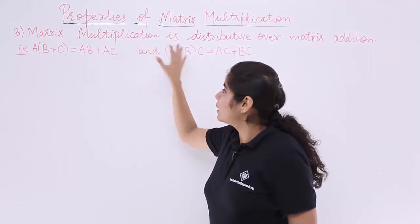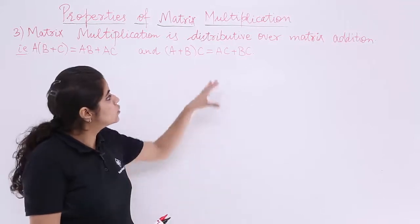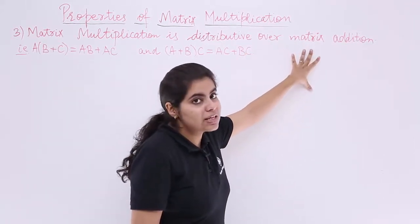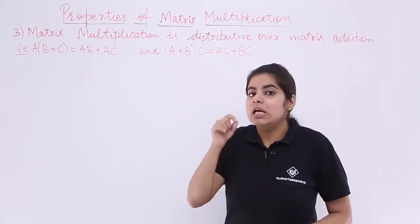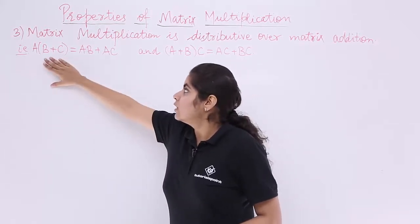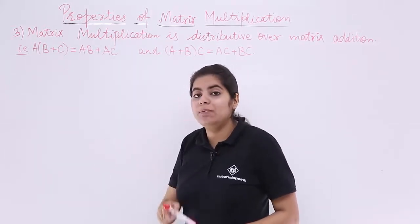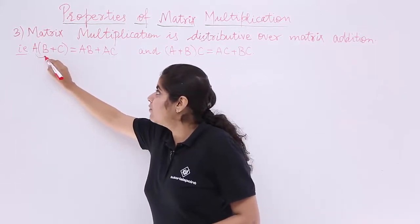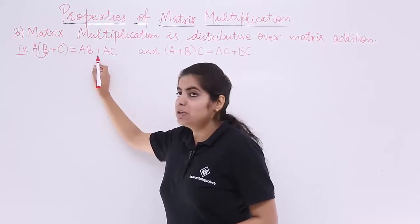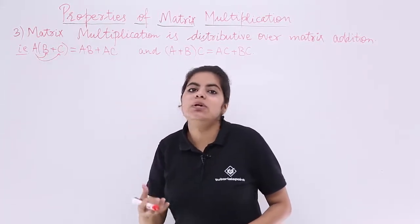Matrix multiplication is distributive over matrix addition. Distributive over matrix addition means both multiplication and addition will be involved. The formulation is: A into (B plus C) is equal to AB plus AC. That means A will first be multiplied by B to give AB, and then plus AC.